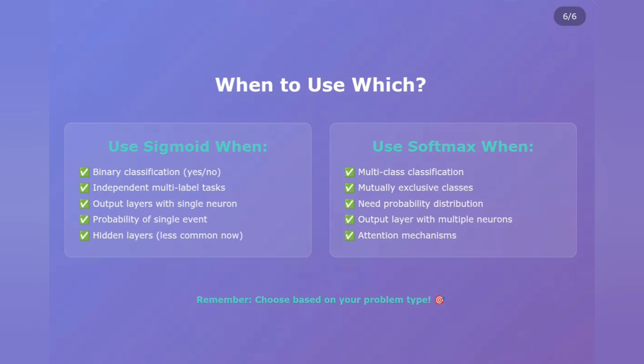And that's a wrap on Sigmoid vs Softmax. You're now equipped to make the right choice for your neural networks. If this helps clarify things, smash that like button and subscribe for more machine learning breakdowns. Drop a comment below with your favorite activation function — I read every single one. Next week we're diving into ReLU and its variants, so make sure you're subscribed. Until then, keep learning and keep building. Peace out!